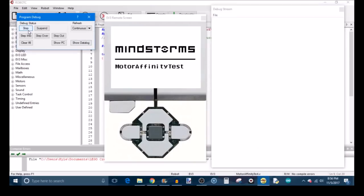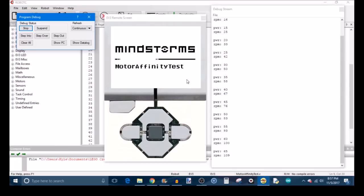The reason why I chose to use Robot C to make my program is because it has this neat debug stream. I had my program print the result RPM to the debug stream along with the corresponding power value. This allowed me to keep track of the rotation speed at each given power level and helped me with data analysis later.